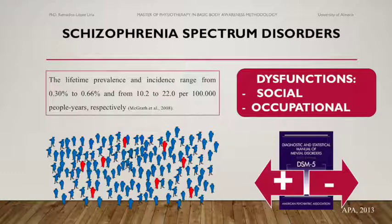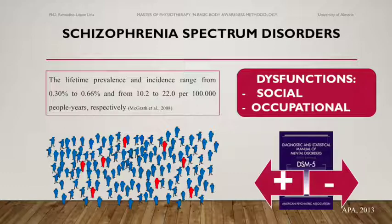According to the Diagnostic and Statistical Manual of Mental Disorders criteria, schizophrenia comprises both positive and negative symptomatology severe enough to cause important social and occupational dysfunction.